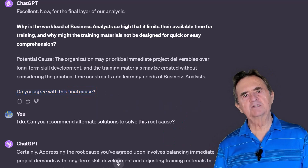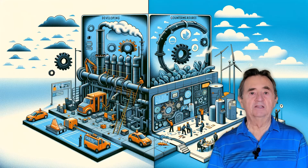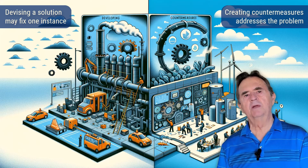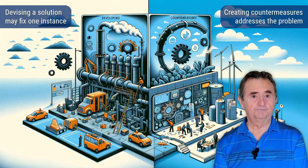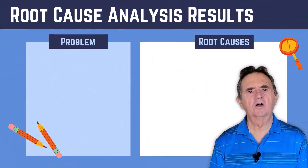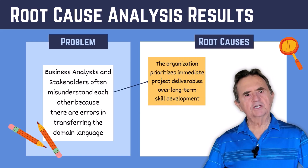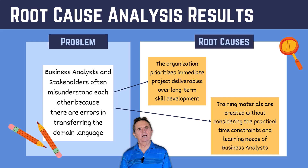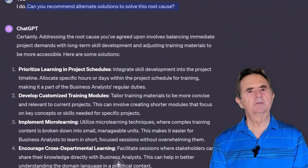Technically, the Five Whys method uses the phrasing 'developing countermeasures' that work to prevent initial problems and identified symptoms from happening in the future. Devising a solution to an issue might fix a single instance, but creating countermeasures focuses on addressing the system, environment, or process that led to the problem in the first place. In our example, the root causes are: the organization prioritizes immediate project deliverables over long-term skill development, and training materials are created without considering the practical time constraints and learning needs of business analysts. I ask ChatGPT to suggest possible countermeasures.